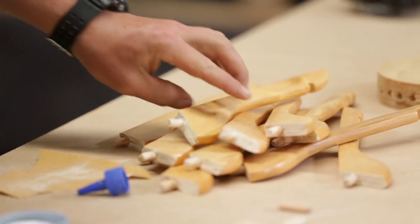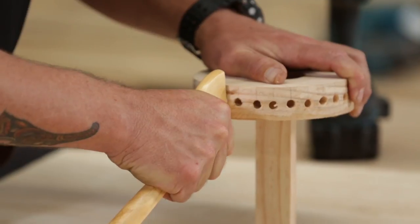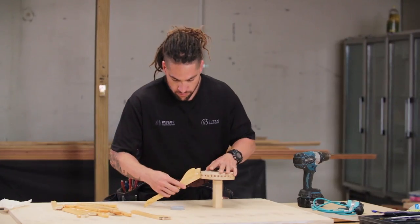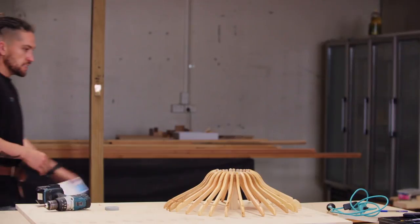With those done, glue the hanger side to the middle. I've got it up on blocks to make it easier. And let it dry for a few hours.